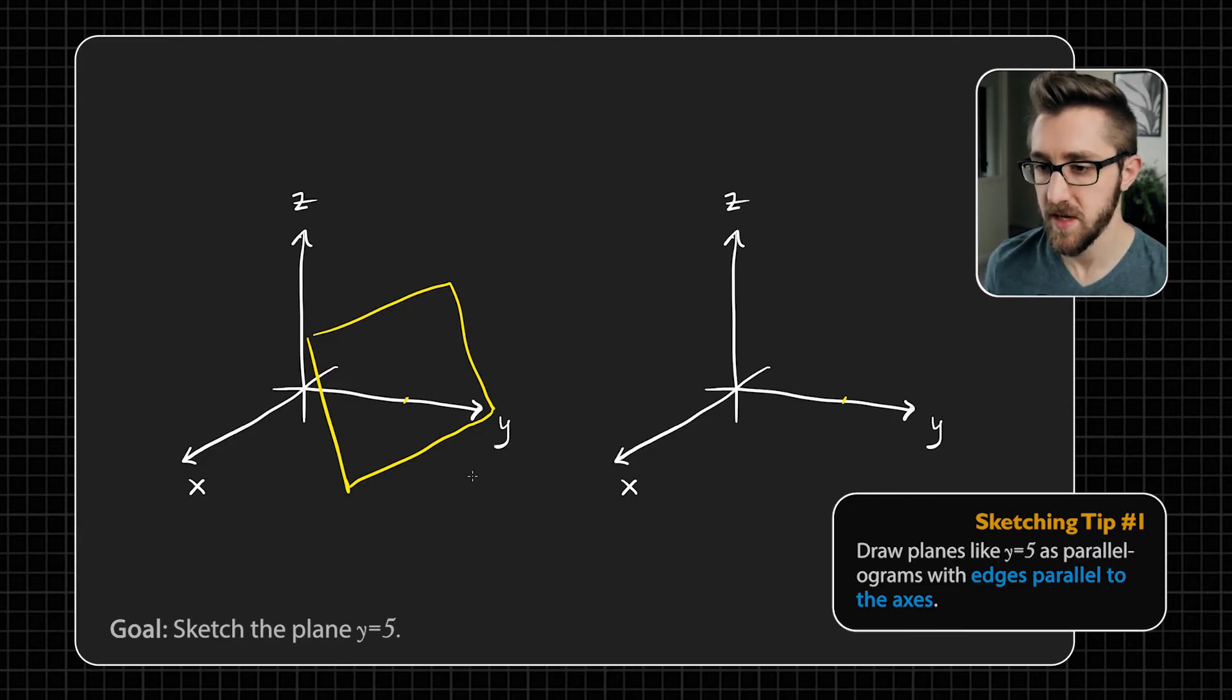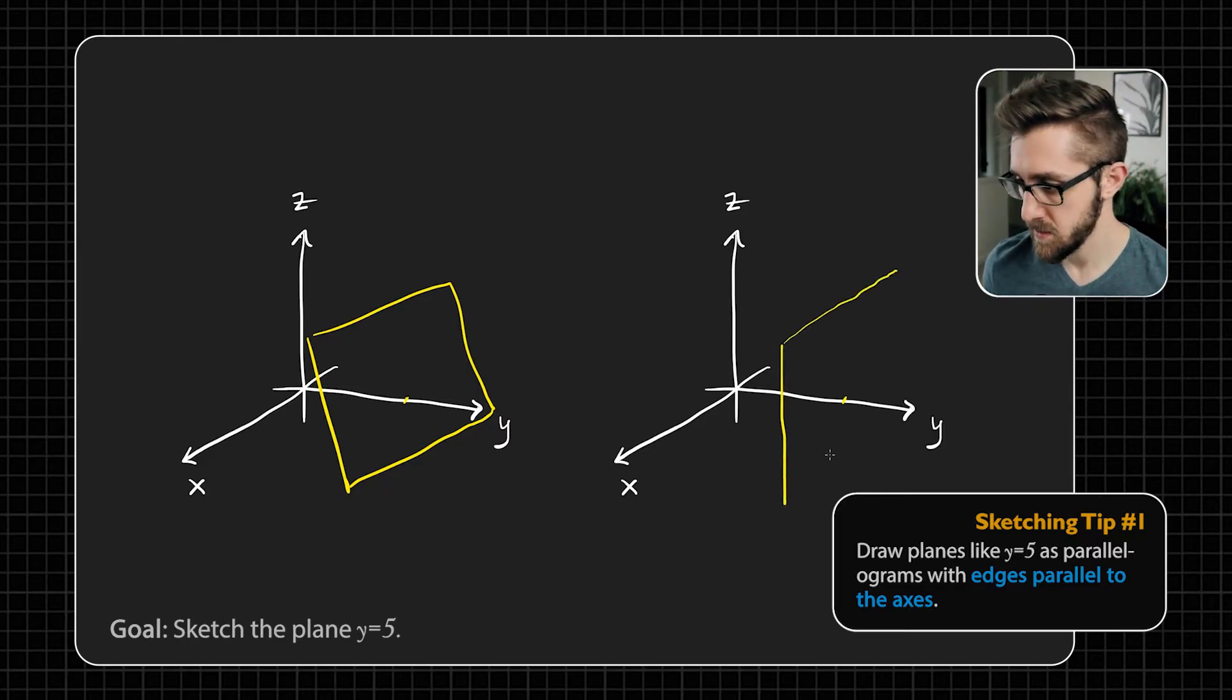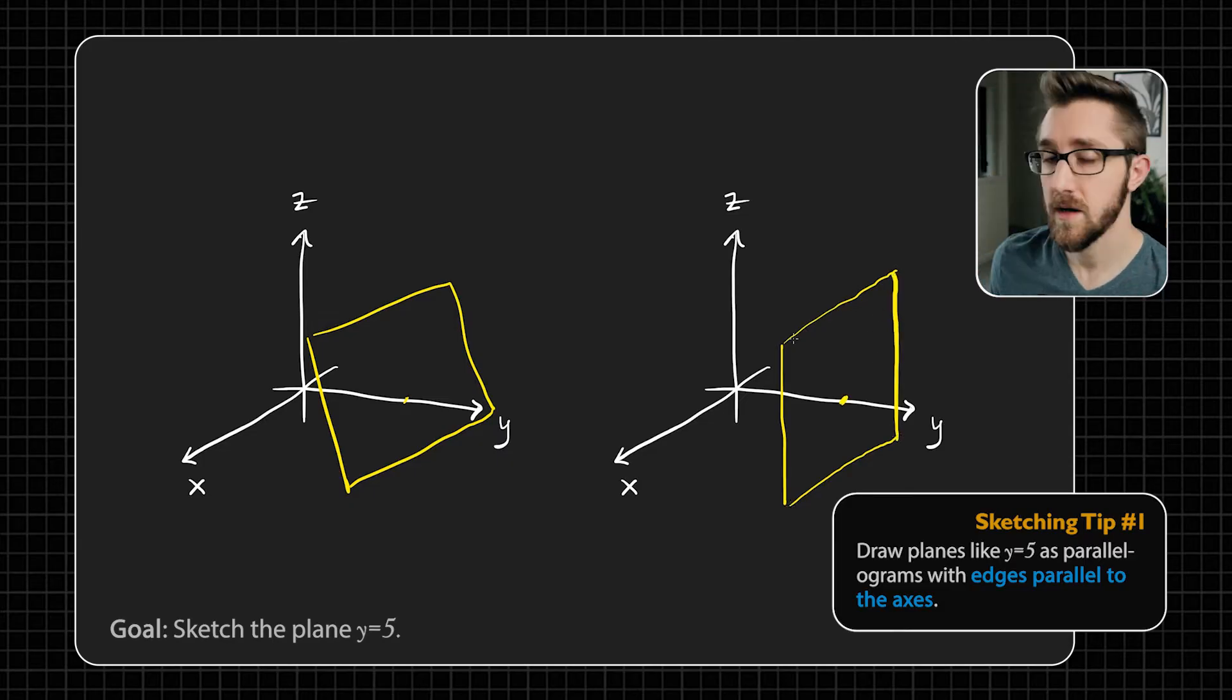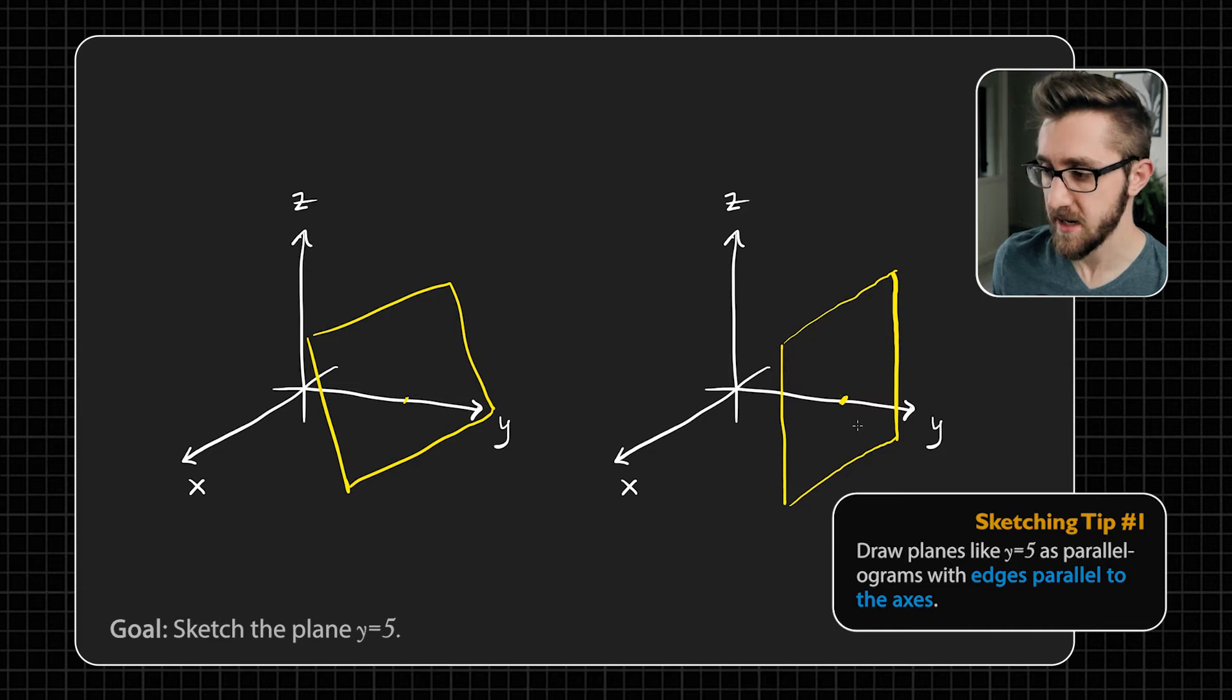So tip number one is actually when you're drawing planes like this, to draw them so that their edges are parallel to the axes that you've drawn. Let me show you what I mean. Instead of drawing this sort of oblique rectangle, I'll draw it so that it's a rectangle whose vertical sides are parallel to the z-axis and whose horizontal sides are parallel to the x-axis. So I just find a picture like this so much more convincing to me that this rectangle that I've drawn here is actually lying in a plane that is parallel to the XZ plane because the edges here are parallel to the axes. So there you go. Whenever you're drawing a plane that is parallel to one of the coordinate planes, draw it as a parallelogram whose edges are parallel to the axes.